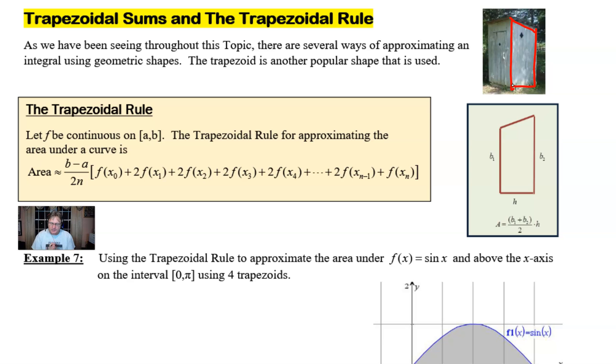Let f be continuous on some closed interval a, b. The trapezoidal rule for approximating the area under a curve is given by area is approximately b minus a over 2n times f(x₀) plus 2f(x₁) plus 2f(x₂) plus 2f(x₃) plus 2f(x₄) plus dot dot dot 2f(x_{n-1}) plus f(x_n).